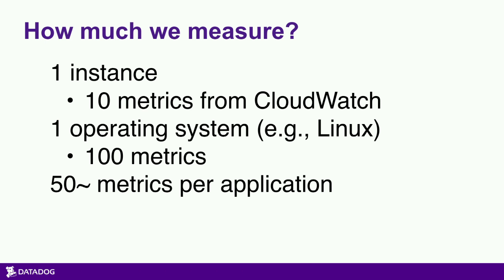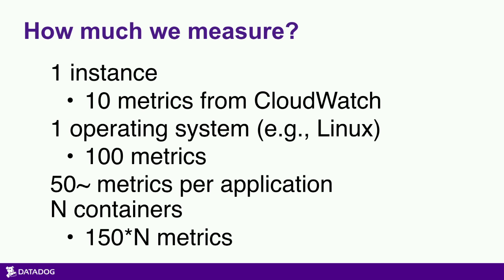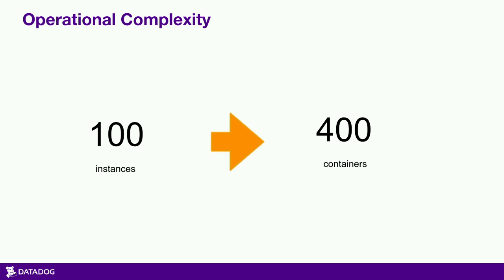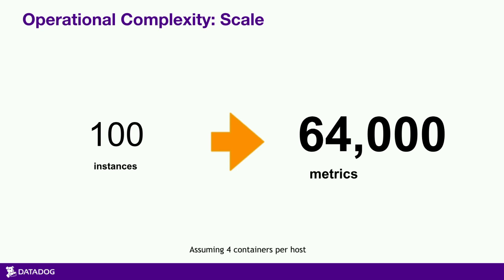Assuming you're on Amazon — other providers will have similar numbers — CloudWatch gives you about 10 metrics per instance, your OS about 100, and a given application like Apache or Nginx about 50 metrics. People are running upwards of 4 containers per virtual machine, which multiplies things further. So 100 instances became 400 containers; the 160 metrics per host became around 640. Multiply that out and you get about 64,000 metrics — especially if you're doing second-level or sub-minute granularity. It's metrics overload.